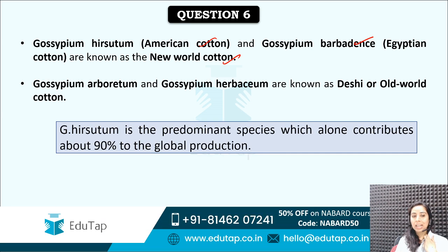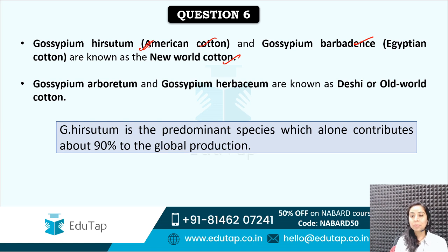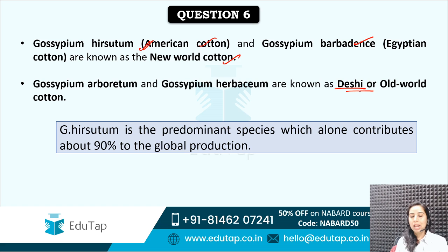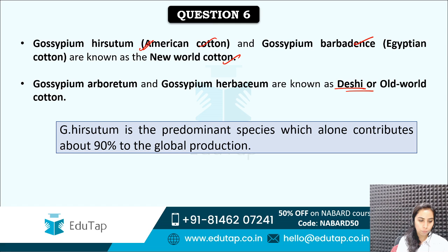Hirsutum is actually the predominant species — American cotton. In the global production of cotton, 90% of the production comes from this particular species only. These desi cottons which we call old world cottons are also called Asiatic cottons because the majority of these are grown in the Asian region only. This is important — you must know this.